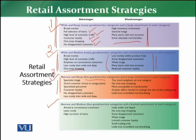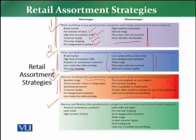The disadvantages of narrow and deep strategy: too much emphasis is on one category because there are few categories. It is not a one-stop solution for the customer since they will find limited categories. It is more susceptible to trends or life cycles. Greater effort is needed to enlarge the size of the trading area. There is no or little scrambled merchandising because a very specific assortment is followed in these stores.